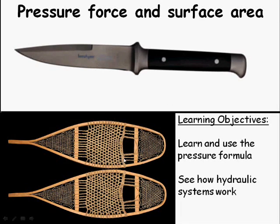The reason I've got a picture of a knife and some snowshoes here is they're both good examples of where we use force and surface area to either increase pressure, as in the case of the knife, or decrease surface area, as in the case of the snowshoes. Knives have a very small surface area over which you apply a force, this increases the pressure. The snowshoes spread out the force of your weight over a greater area, meaning that you have a lower pressure on the snow and you don't sink into it.